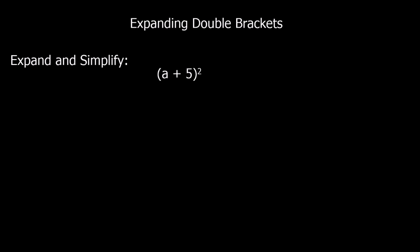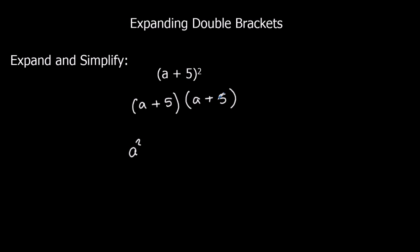This one is written in a different way — we've got a plus 5 squared. You need to know that squared means multiplied by itself, so a plus 5 squared can be written as a plus 5 multiplied by a plus 5. Following the same process: a times a is a squared, a times 5 is 5a, 5 times a is 5a, and 5 times 5 is 25. We simplify by adding 5a to 5a, which is 10a. So the answer is a squared plus 10a plus 25.